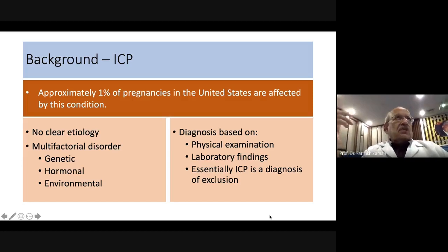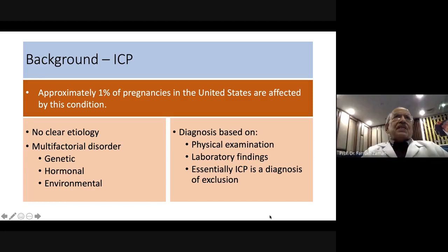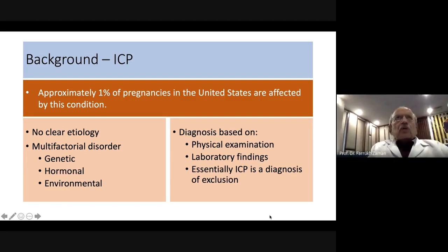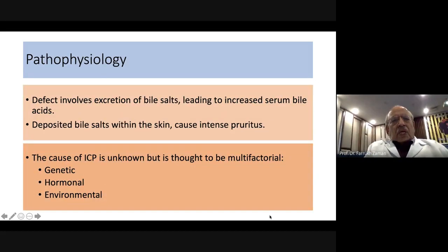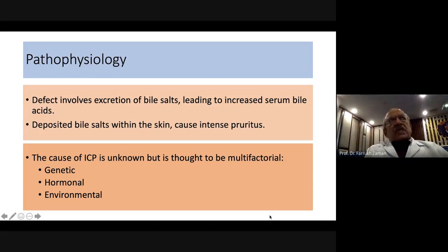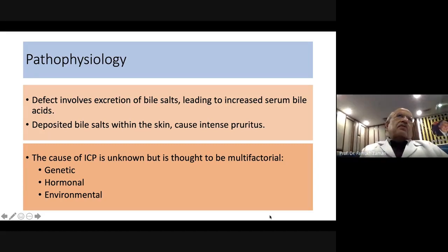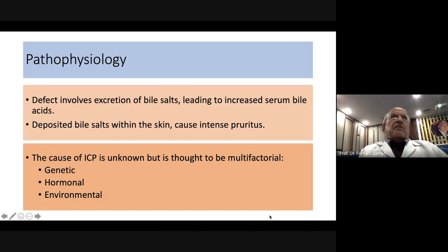There is no clear etiology, but three main factors are associated: genetic, hormonal, and environmental. Diagnosis is based on patient complaints, physical examination, and laboratory findings, essentially ruling out other liver dysfunctions. The defect involves accumulation of bile salts, as the liver finds it difficult to excrete bile acids. Bile salts released into the skin cause intense pruritus.